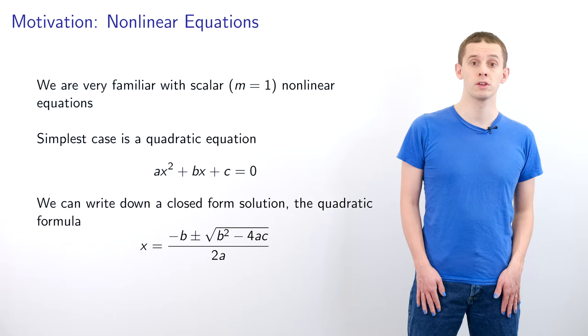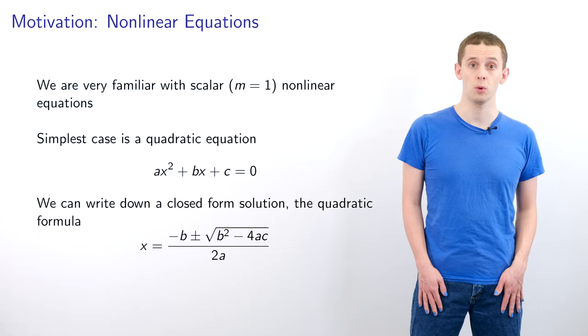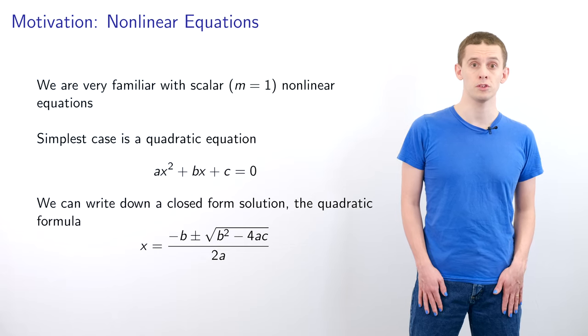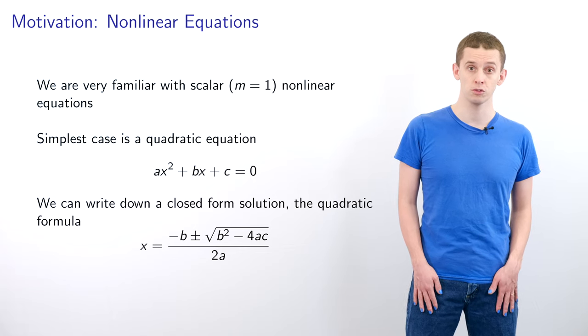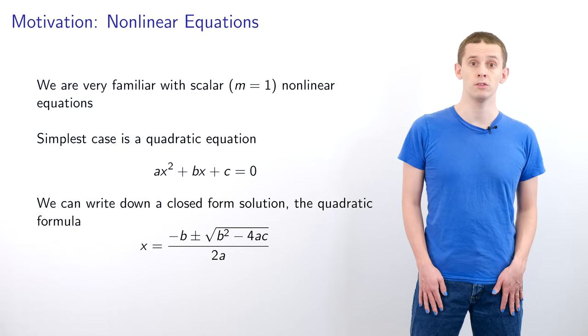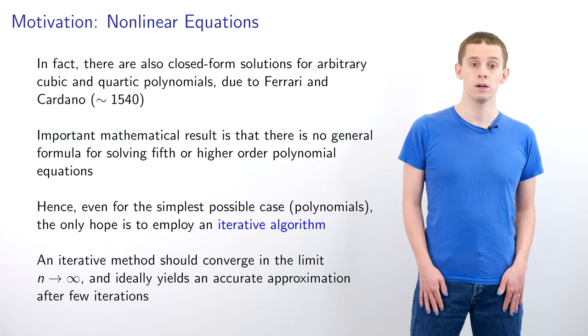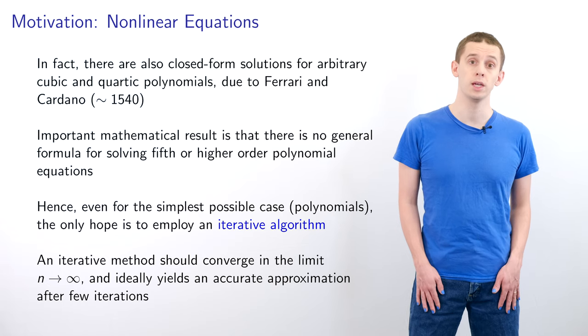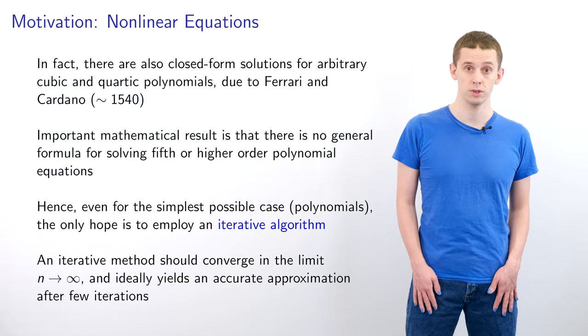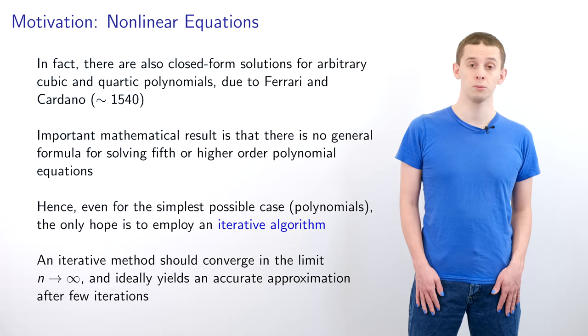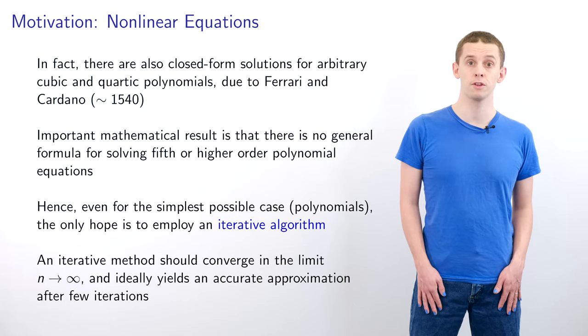And we're very familiar with scalar non-linear equations where m equals 1. And perhaps the simplest case would be the quadratic equation ax squared plus bx plus c equals 0. And in this case we can write down a closed form solution. We have the quadratic formula that tells us that x equals minus b plus minus the square root of b squared minus 4ac divided by 2a. And in fact there are closed form solutions for cubic and quartic equations that are due to Ferrari and Cardano and have been known for many centuries.